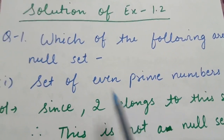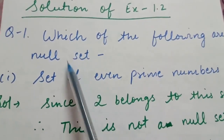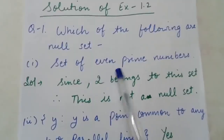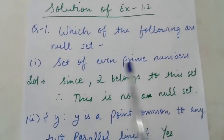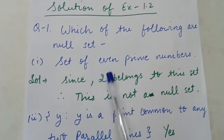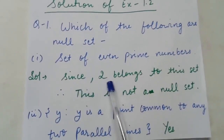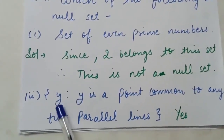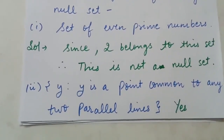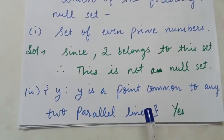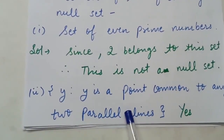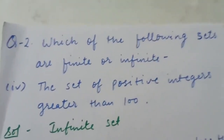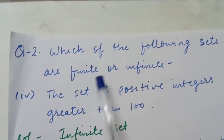Now we will discuss solutions of Exercise 1.2. Question 1: which of the following are null sets? First: the set of even prime numbers. Since 2 is even and prime, 2 belongs to this set, so this is not a null set. Second: {y : y is a point common to any two parallel lines}. Since there is no point common between two parallel lines, this is an empty/null set.